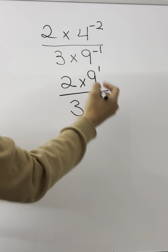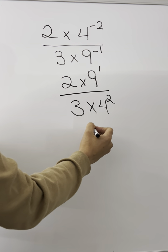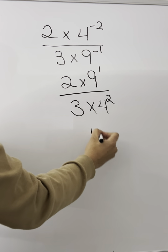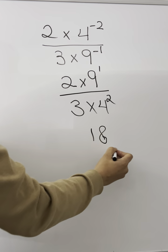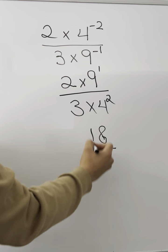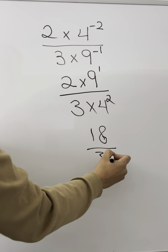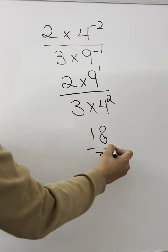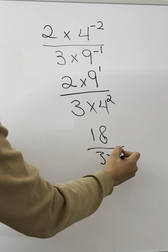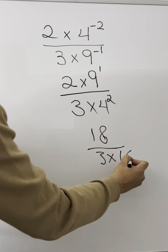Now we have 2 times 9, which is 18. And here is 3 times 4 squared, which is 16.